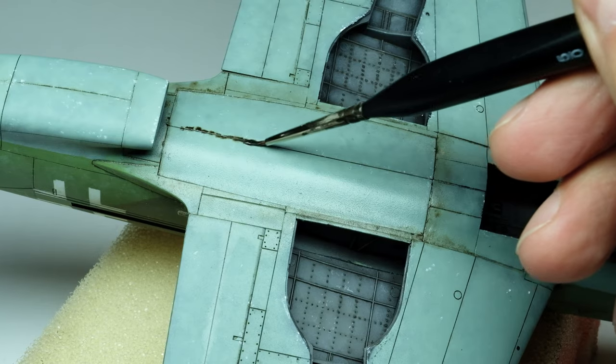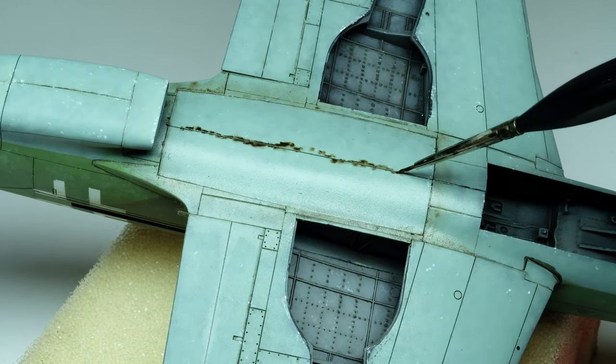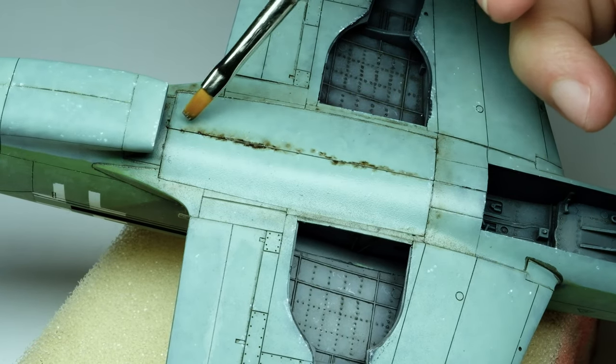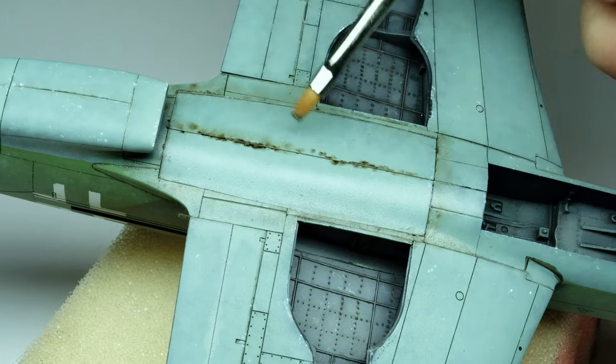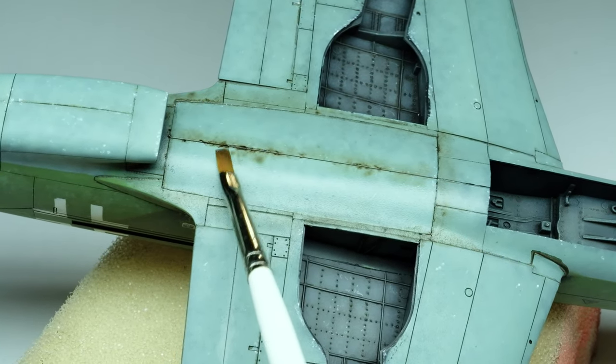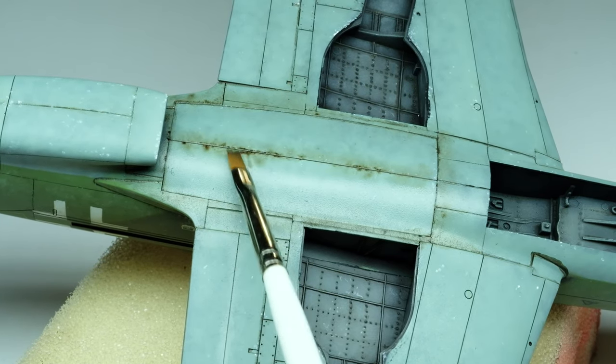Now on to the bottom of the aircraft. It's almost the same procedure as on the top surface. First I wet the area I work on with odorless thinner, then I paint some sepia oil color from Abteilung 502 in little dots and lines in the corners of panels, and then I immediately start blending these oil dots with a moistened flat brush until they are blurred.